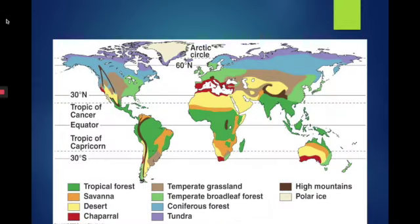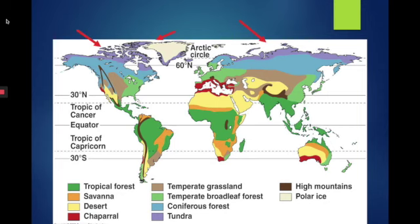You would recognize this map from last week's lesson. It's a map showing all the biomes around the world, and specifically we are looking at the tundra today, which is located in the most northern part of the world.